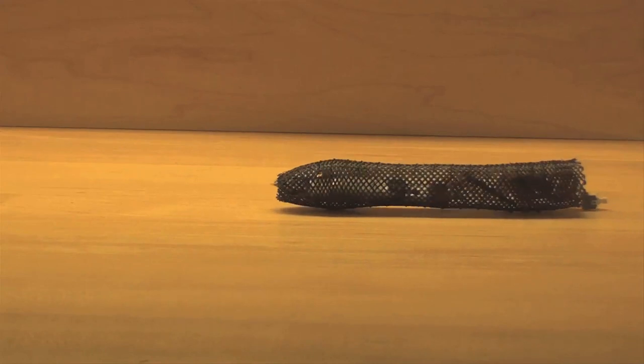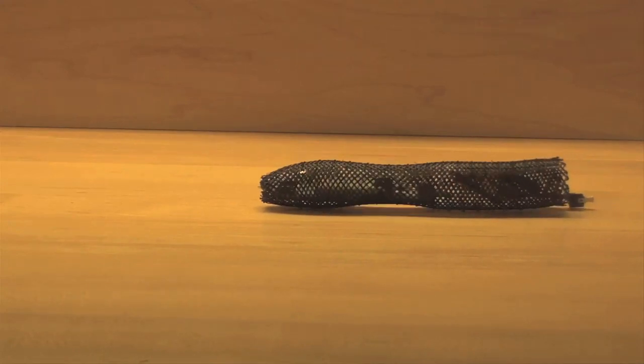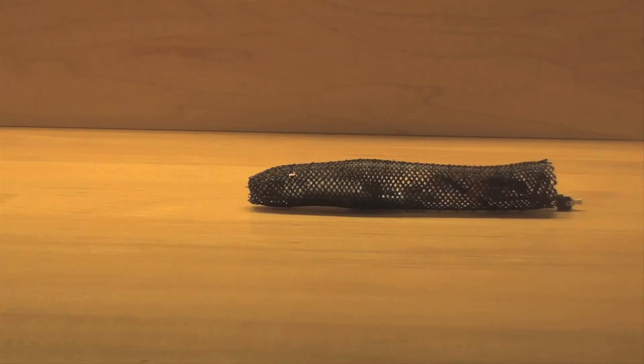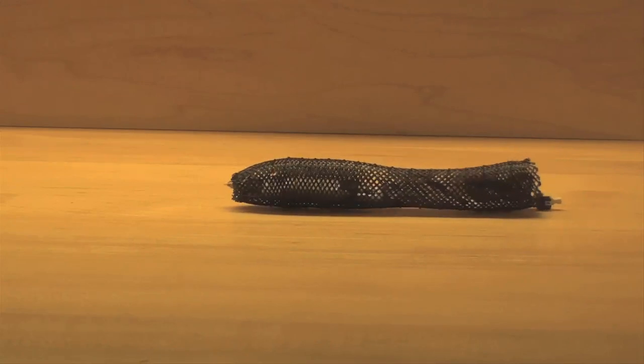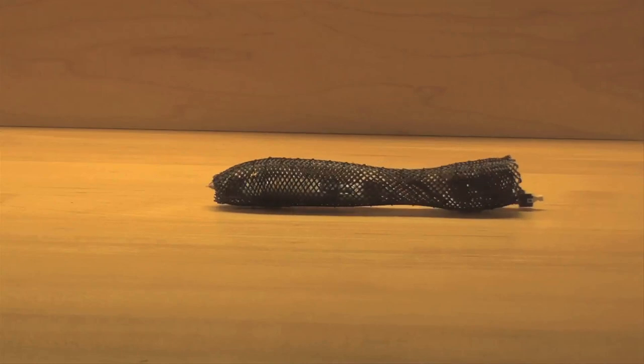Researchers at MIT, Harvard University, and Seoul National University have engineered a soft, autonomous robot that can crawl across surfaces by squeezing segments of its body like an earthworm.